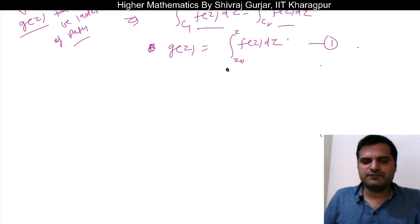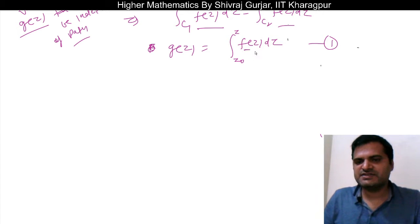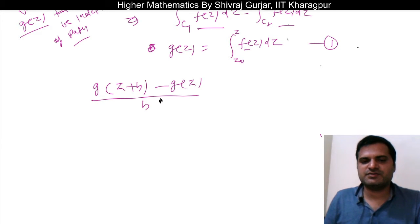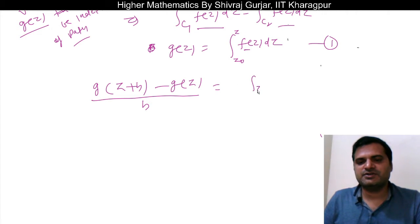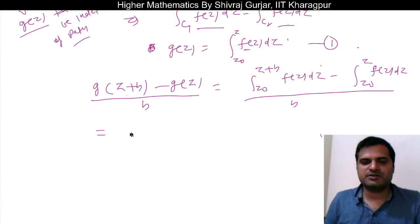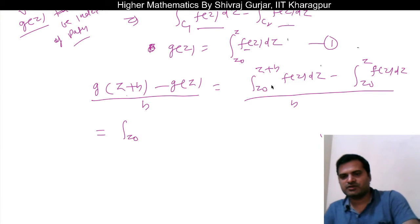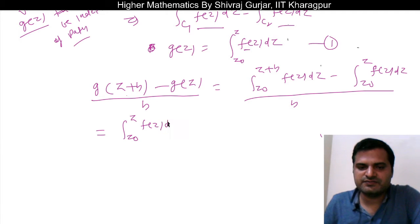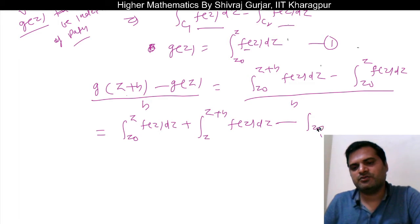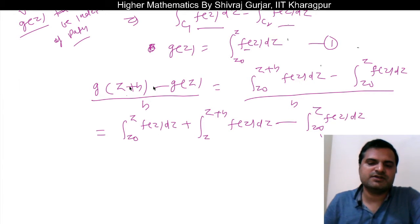So let us define a new function g(z) as the integral from z₀ to z of f(z)dz along some path, where z₀ is the initial point and z is the final point. Now we want to show that f(z) is analytic. For that, let us examine the differentiability of g(z) by looking at [g(z+h) - g(z)] / h. If this limit exists, then g(z) will be differentiable.